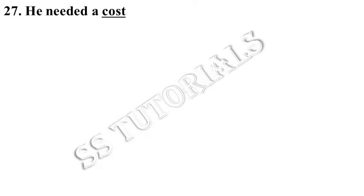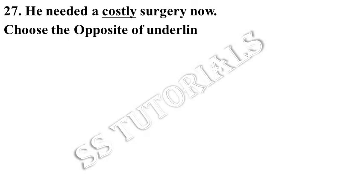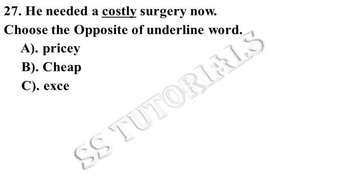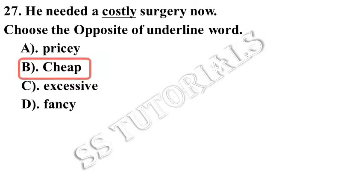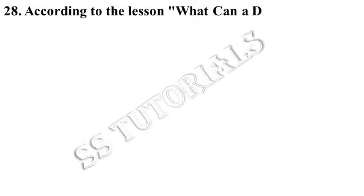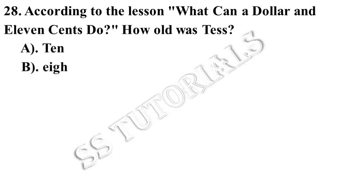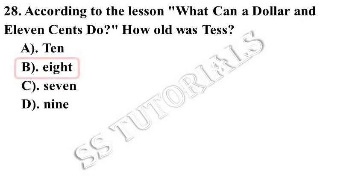He needed a costly surgery now. Choose the opposite of the underlined word. According to the lesson 'What can a dollar and eleven cents do?', how old was Tess? Answer: 8 years old.